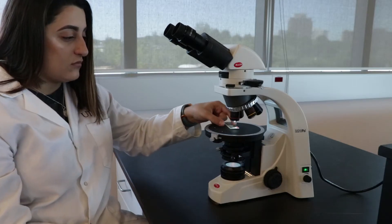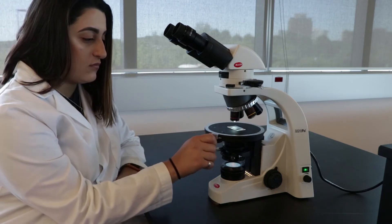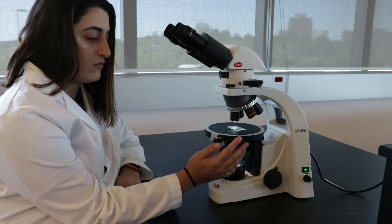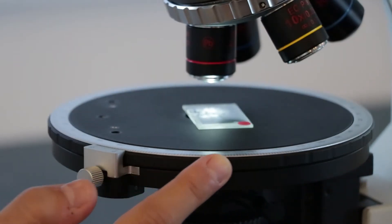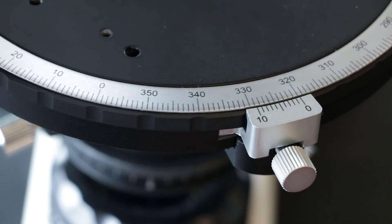Place a slide on the stage. You'll notice that it can rotate 360 degrees when the locking screw is loosened. Make note of the degrees, as the labels can be used to measure angles between features, such as the extinction angle.